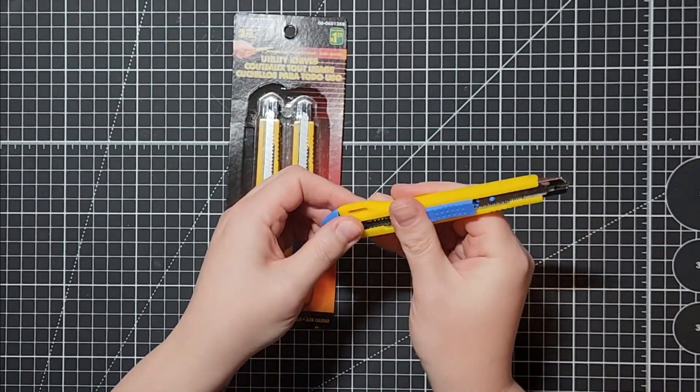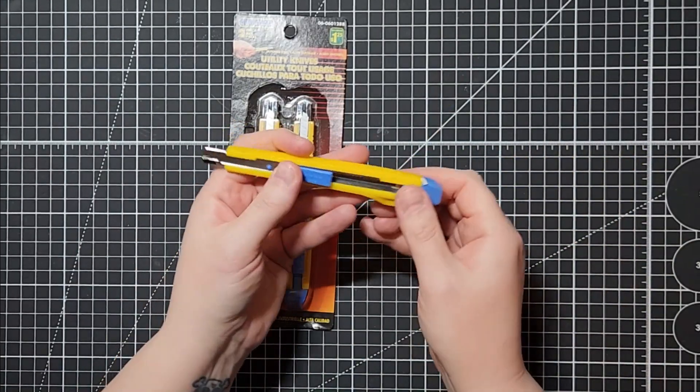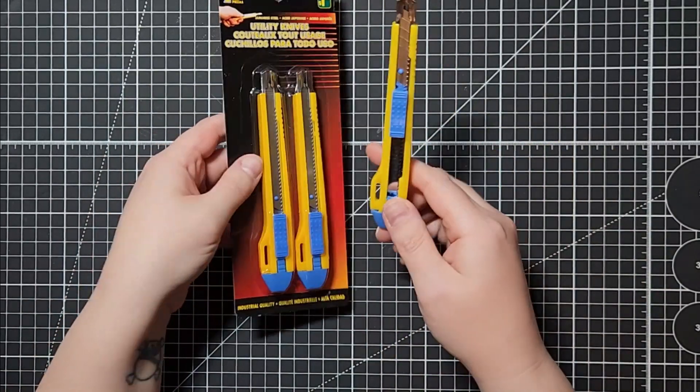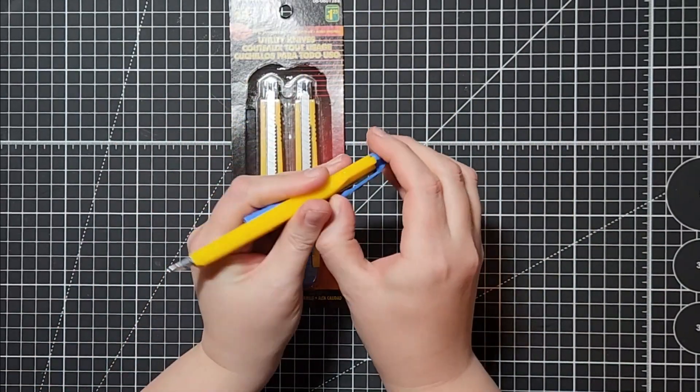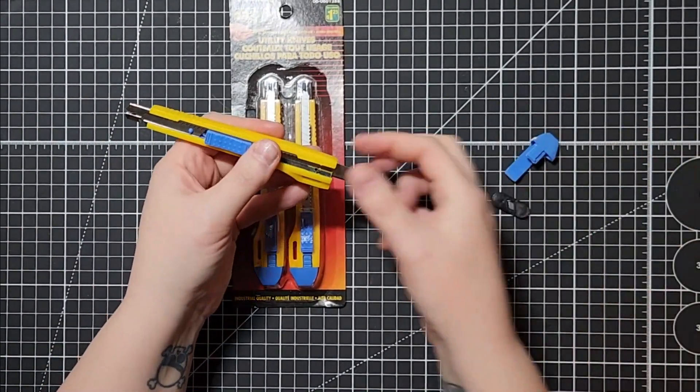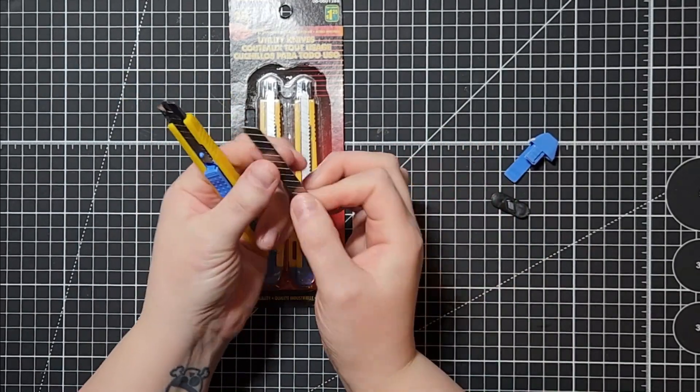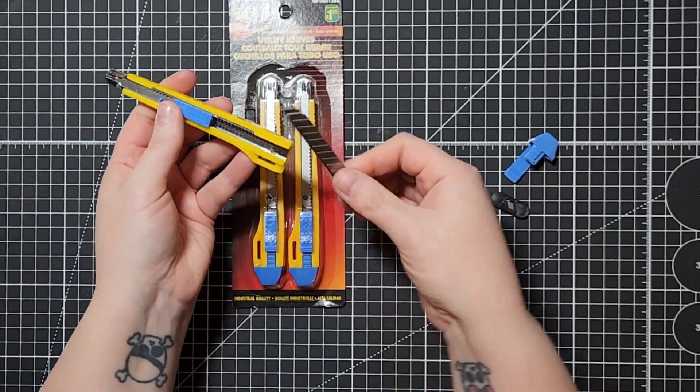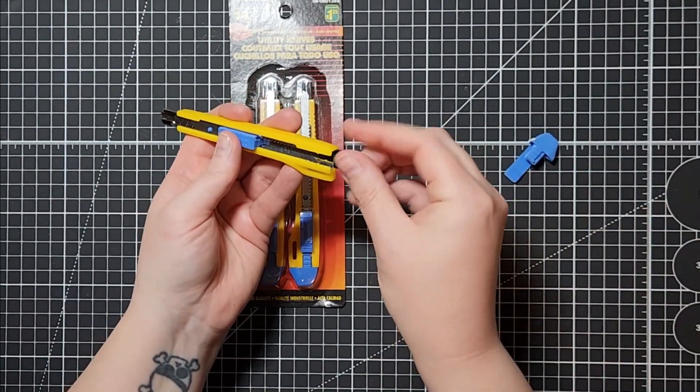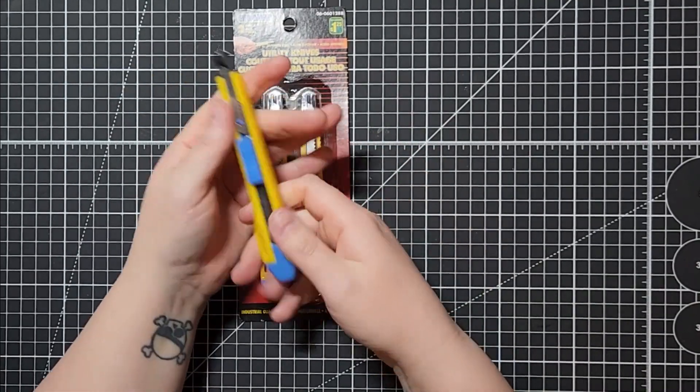These are like only a dollar 25 for two of them and I think you can get replacement blades for these. There might be extra. Yeah, there's extra blades in here. If you take off this bottom part it should have extra blades in it. Oh there we go, yeah so it has two extra blades in it so they will last you quite a long time.